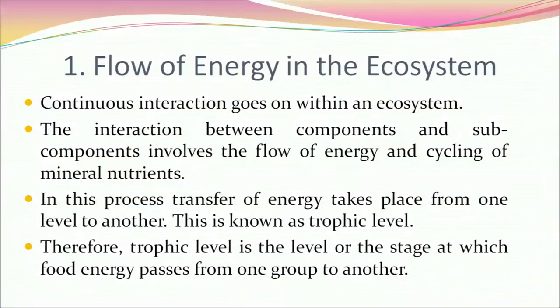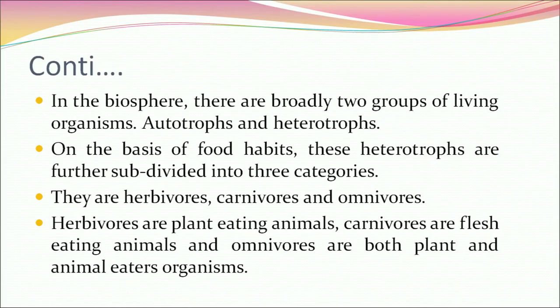Continuous interaction goes on within an ecosystem. The interaction between components and subcomponents involves the flow of energy and cycling of mineral nutrients. In this process, transfer of energy takes place from one level to another — this is known as a trophic level. A trophic level is the level or stage at which food energy passes from one group to another. In the biosphere, there are broadly two groups of living organisms: autotrophs and heterotrophs. On the basis of food habit, heterotrophs are further subdivided into herbivores, carnivores and omnivores.